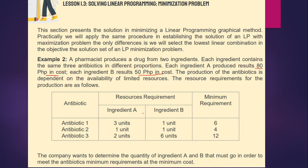The resource requirements for production are as follows, given in a table. For ingredient A: 3 units, 1 unit, 2 units. Ingredient B: 1 unit, 1 unit, and 6 units for antibiotic 3. We need to find the minimum requirements and minimum cost. The ingredients for antibiotics are very expensive, so we need minimum requirements and minimum cost.